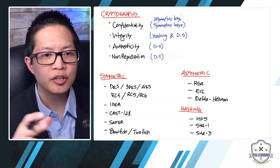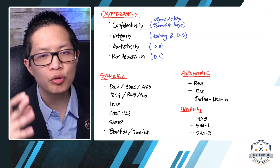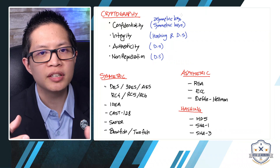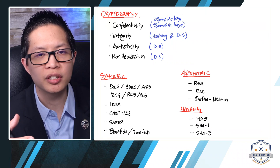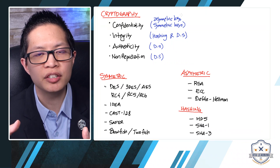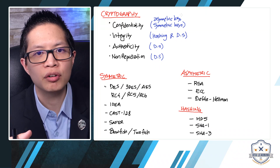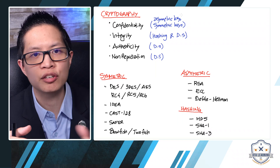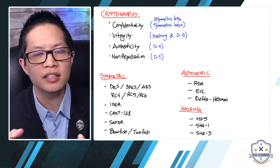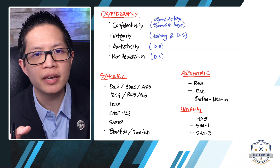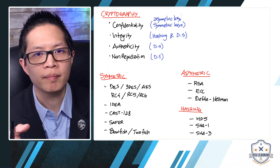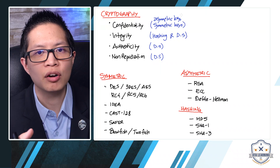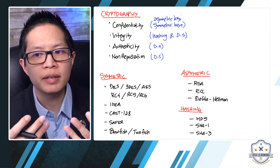Hashing is basically a mathematical calculation on the message. You take the message, run a calculation, and get a number. That number will change if the message was changed. When John receives the message, he runs the same calculation on his side and compares it to the hash I also sent him. If both match, the message was not changed.